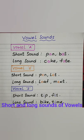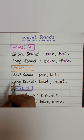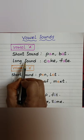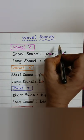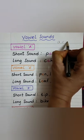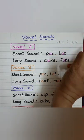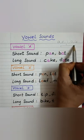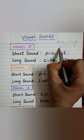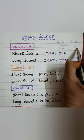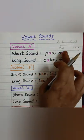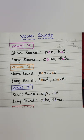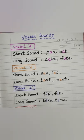Hi all, welcome to Level Up Phonics. In this video we will see the short sound and long sound of vowels together. The vowels are A, E, I, O, U. These are the vowels and there are two sounds of these vowels — short sound and long sound. I have already made videos on these and this is just a revision for both vowels together.